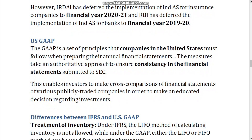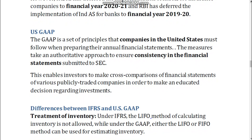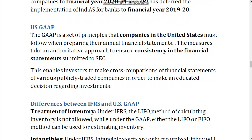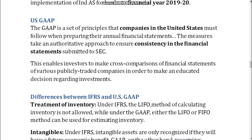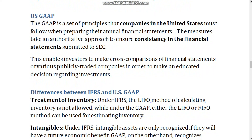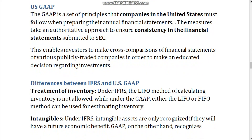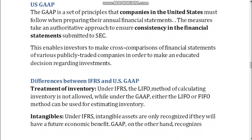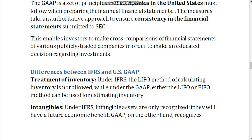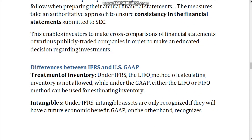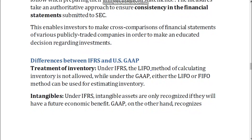U.S. GAAP. GAAP is a set of principles that companies in the United States must follow when preparing their annual financial statements. The measures take an authoritative approach to ensure consistency in financial statements submitted to the SEC. This enables investors to make cross-comparisons of financial statements of various publicly traded companies in order to make an educated decision regarding investments.